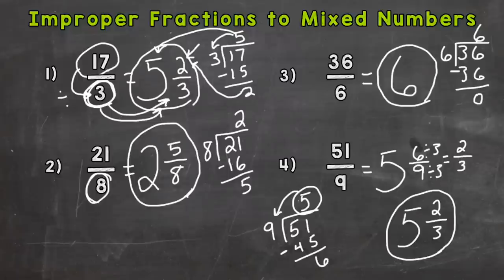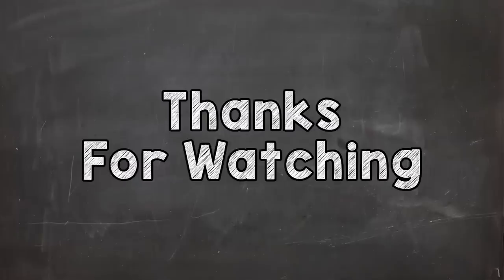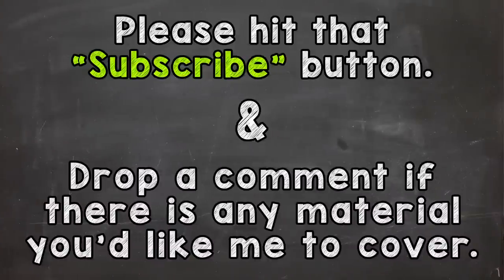All right. So that's how you convert improper fractions to mixed numbers. All it is is division and then rewriting your whole number, remainder, and denominator in the correct places. Thanks so much for watching. Until next time. Peace.